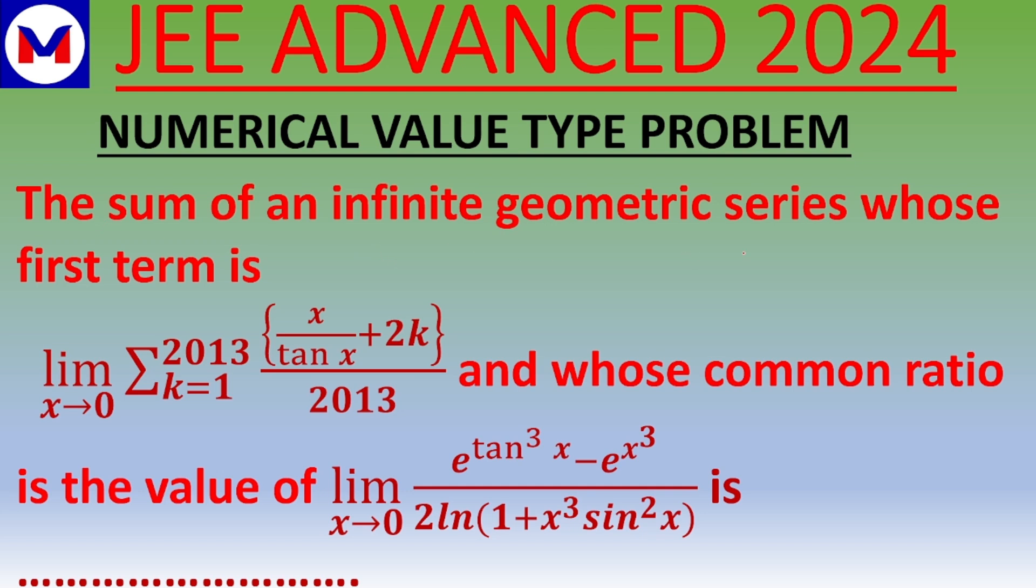The sum of an infinite geometric series whose first term is limit x tends to 0, sigma k equals 1 to 2013, fractional part of (x/tan x + 2k/2013), and whose common ratio is the value of limit x tends to 0, (e^(tan³x) - e^(x³)) divided by (2 ln(1 + x³sin²x)). This problem involves limits and fractional part concepts.